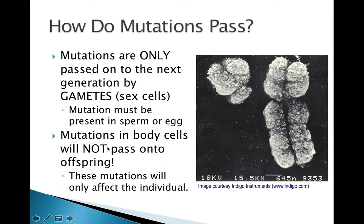However, if the mutation occurs in a body cell — say a skin cell, a lung cell, or a muscle cell — those do not get passed on to your children. You only make your offspring with your sex cells, with your sperm and egg. You don't use your skin cells to make a baby. So if you had skin cancer because you exposed your skin to too much radiation, that doesn't mean your children will develop it. Mutations in body cells will not pass on to your offspring, but they could affect the individual.